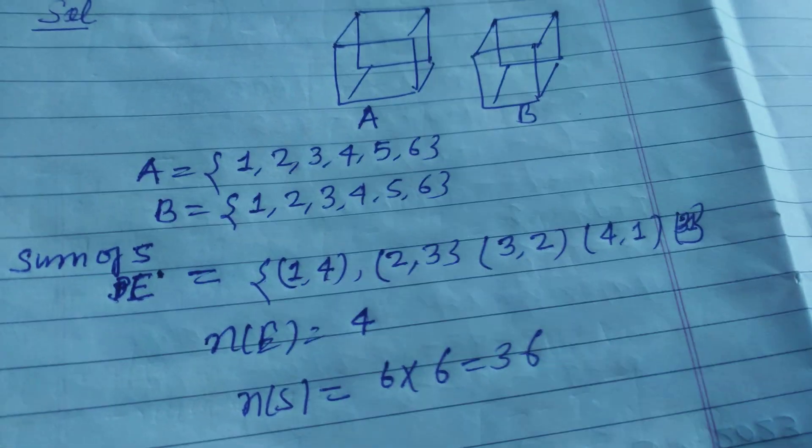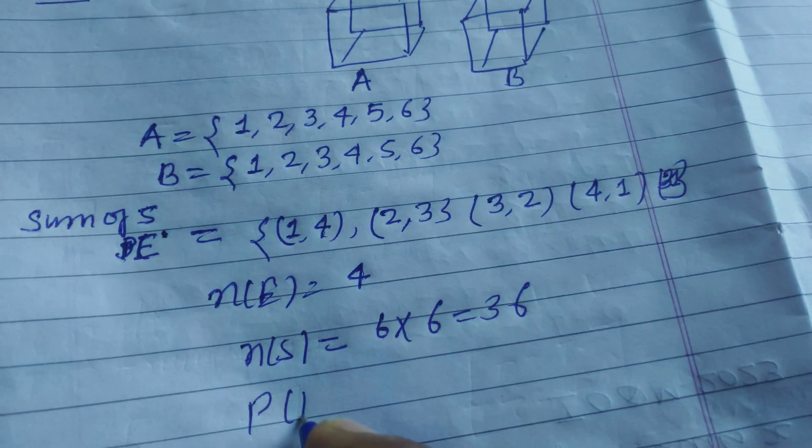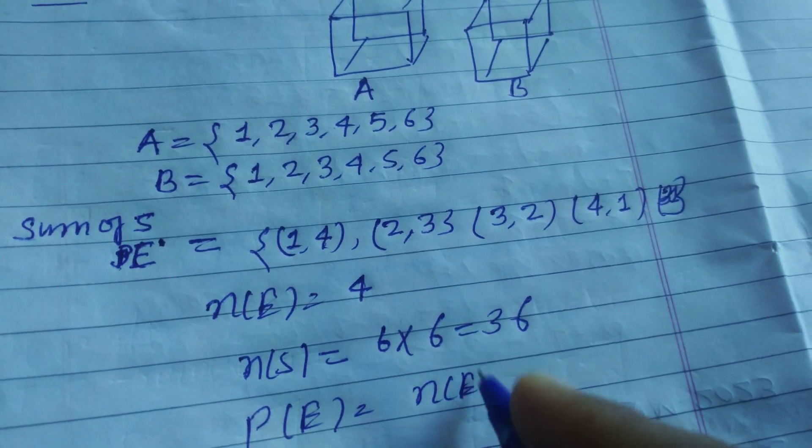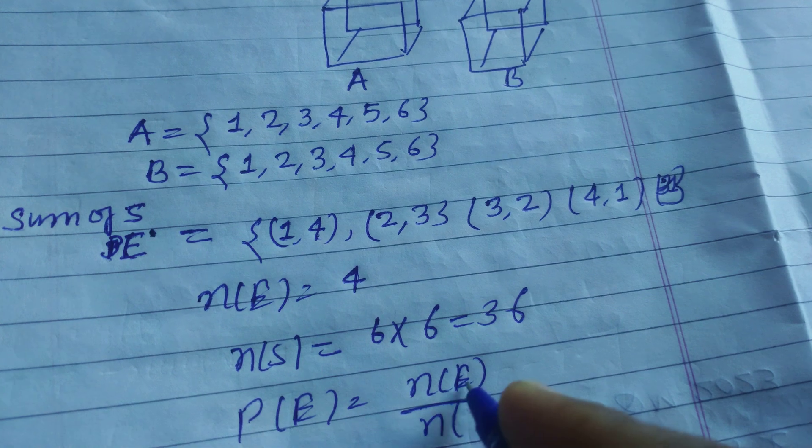And you know that probability equals n(E) over n(S), number of favorable events upon number of elements in sample space.